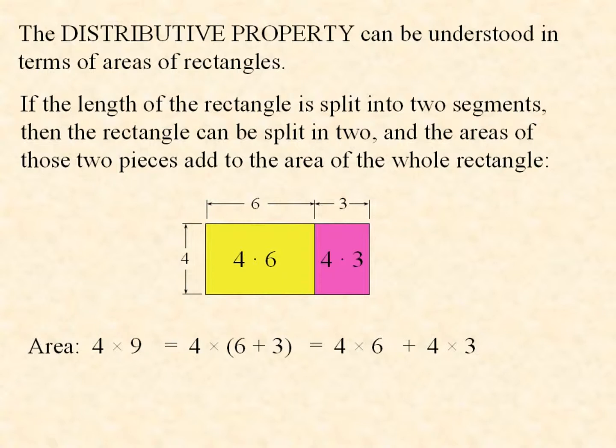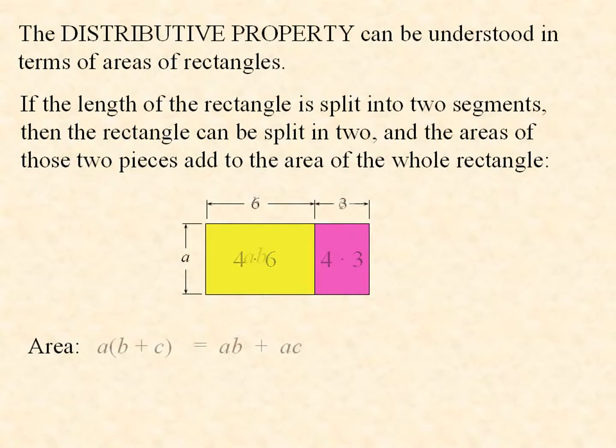Let's do this with variables. If the width is a, and the lengths of those little rectangles are b and c, then a times b plus c is equal to ab plus ac. That's your distributive property, and it is true because we can add the areas of the smaller pieces.